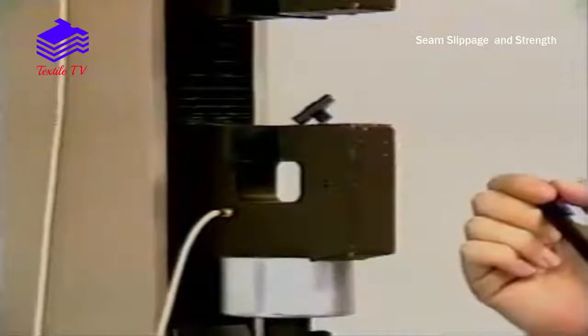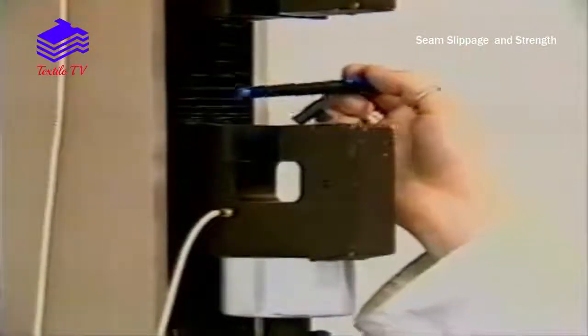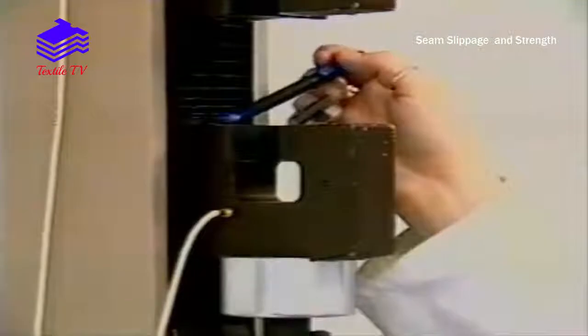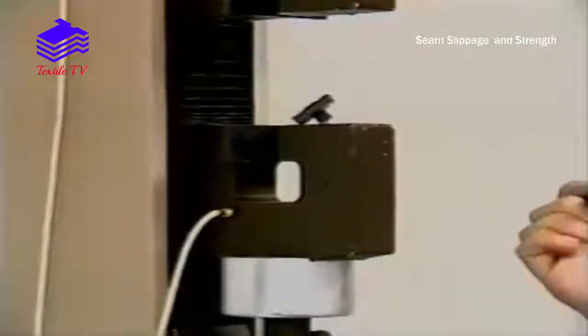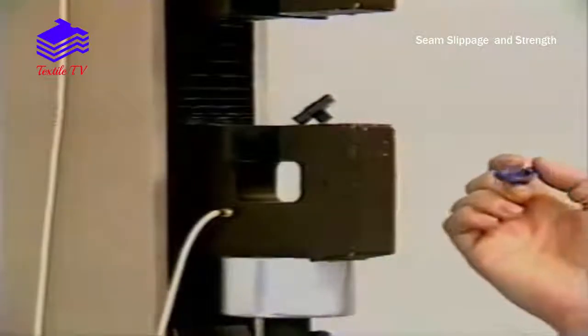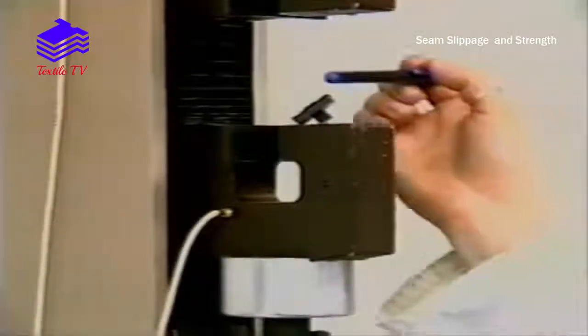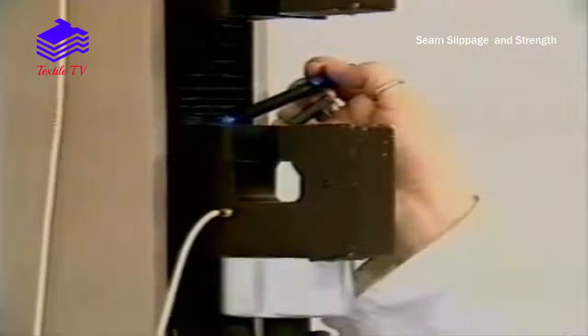The Hounsfield is set up with correct jaw faces in both top and bottom holders. The back jaw being 75 by 25 millimeters and the front face being 25 by 25 millimeters.